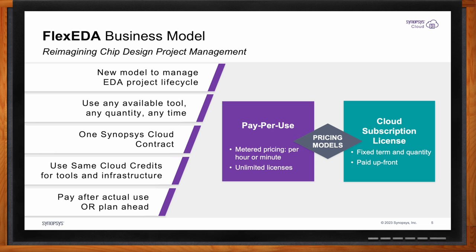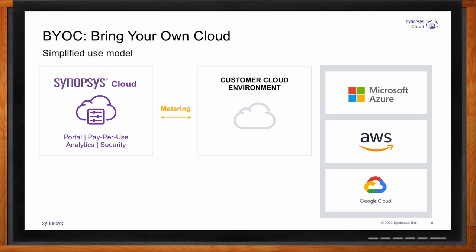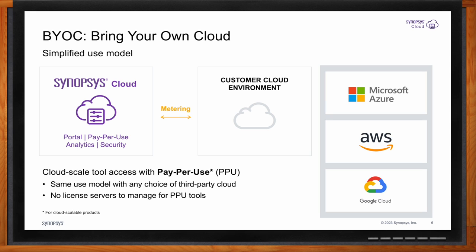Can you provide more details about the different deployment options? We enable customers to do what we call BYOC — Bring Your Own Cloud — for customers who are currently leveraging public clouds themselves. The Synopsys Cloud BYOC option is available across the top three cloud providers: Microsoft Azure, Amazon Web Services, and Google Cloud. It enables customers to deploy Synopsys Cloud with the Flex EDA model without making any change to the way they use tools today. All they need to do is connect their existing cloud environment to Synopsys Cloud, and once connectivity is established, they can start leveraging the pay-per-use Flex EDA business model with no changes to tools, binaries, scripts, or flows.